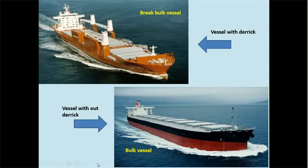However, for bulk vessels, most of the cargo being loaded consists of sugar, maize, soybeans, cement, and also palm kernel expeller. So you can see the difference and the purpose of each of these two vessels.